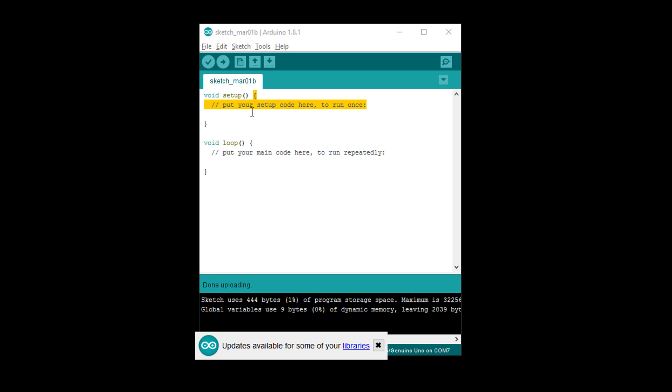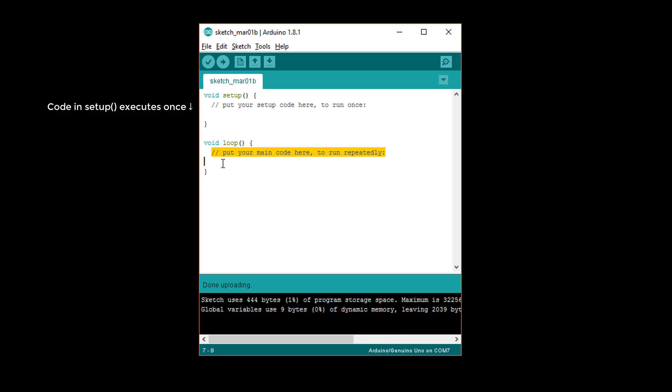Once the program has reached the end of the setup function, it then moves to the loop function. Each command you write between the curly braces of the loop function is executed in order. Once the program reaches the end of the loop function, it then moves to the top of the loop function, where it executes your code again.